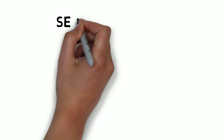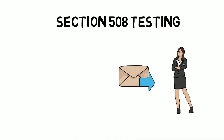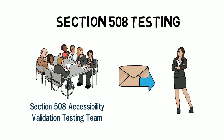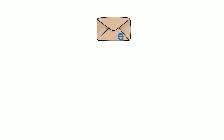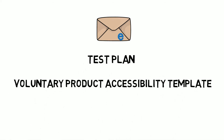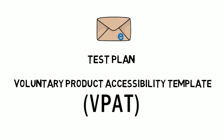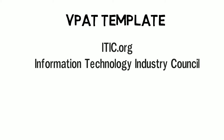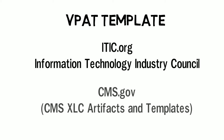For Section 508 testing, the requester will receive an email from the CMS 508 Accessibility Validation Testing Team. This email will include a test plan and a link to the Voluntary Product Accessibility Template, also known as the VPAT. The VPAT can be found on the Information Technology Industry Council website at ITIC.org, or by visiting the CMS XLC Artifacts and Templates section on CMS.gov.